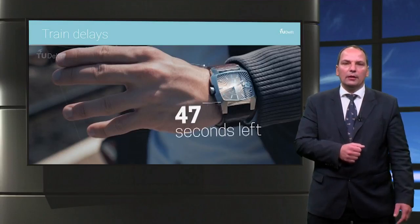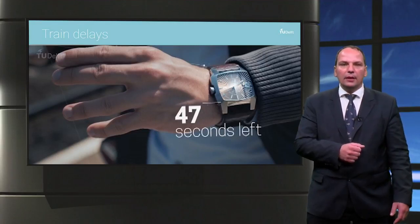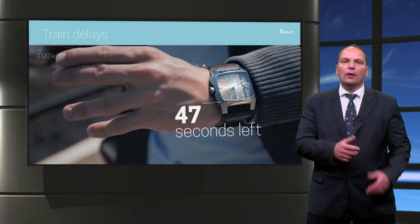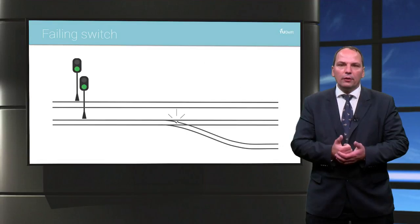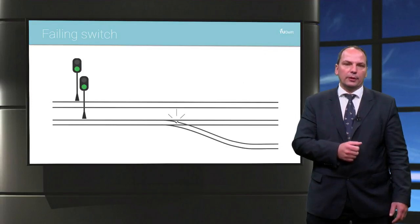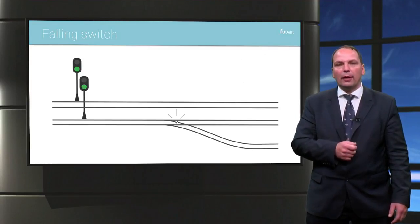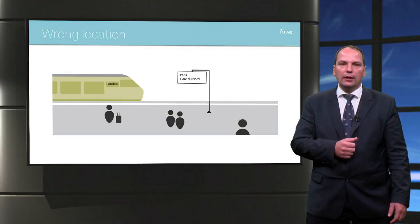A train delay is caused by some sort of failure or error. However, solving this and dealing with the consequences is a complex interaction between different fields. For example, look at the case of a failing switch. A failure happens when a crucial component of the switch is not operating the way it is supposed to be. This will limit train capacity on a track, often resulting in delays. These delays will result in trains not being where they are supposed to be, so direct corrections in the operations are needed to keep the rest of the system functioning as normal.